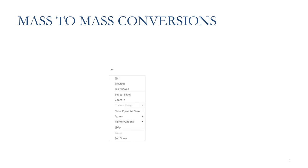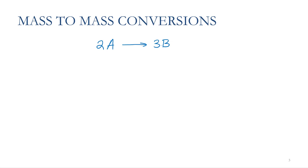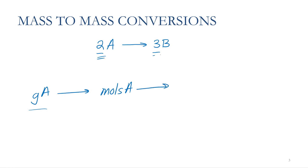Let's pretend we have a generic chemical equation: 2 moles of A makes 3 moles of B. If I want to figure out how much A I need to make so much of B, I first have to convert the mass of A into moles of A using molar mass as my conversion factor, and then use the coefficients of my balanced chemical equation to convert to moles of B.